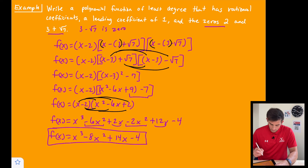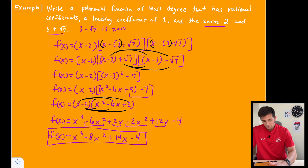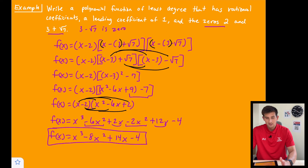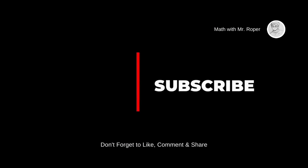So our polynomial function of least degree with rational coefficients, a leading coefficient of 1, and zeros of 2 and 3 plus root 7 is f of x equals x cubed minus 8x squared plus 14x minus 4. And that's how we can use the Irrational Conjugates Theorem to help us write a polynomial function.